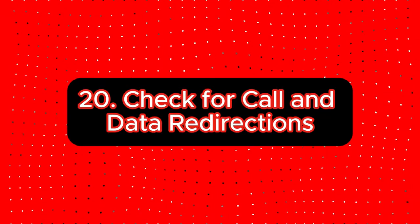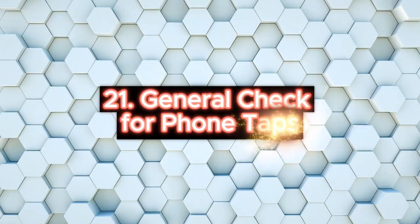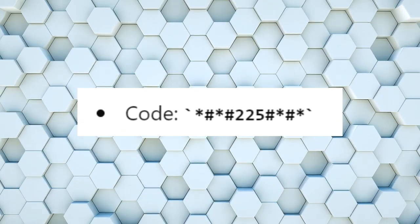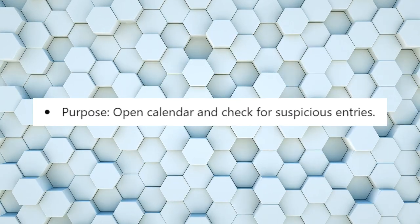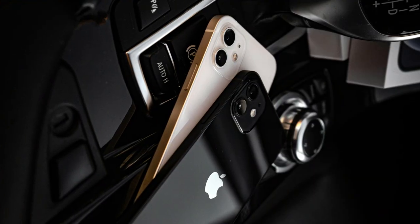To check if your calls are set as conditional call forwarding, press *#67# and to deactivate it press ###67#. To check if there are any calls and data redirections, press *#004# and to deactivate it press ##004#. To check for any suspicious entries, press *#*#225#*#* — this will open the calendar and check for any possible suspicious entries. These codes cover most scenarios where your phone is being tracked or calls and messages are being forwarded. Note that these codes work for most GSM phones, however availability might vary depending on your carrier and phone model. Always consult your carrier if you encounter any issues.